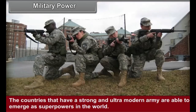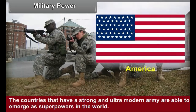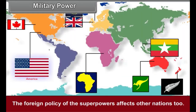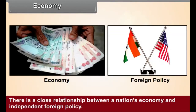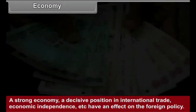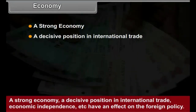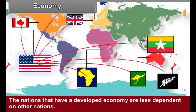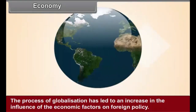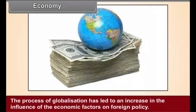Military Power: The countries that have a strong and ultra-modern army are able to emerge as superpowers in the world. The foreign policy of the superpowers affects other nations too. The countries that are militarily weak face limitations while framing their independent foreign policy. Economy: There is a close relationship between a nation's economy and independent foreign policy. A strong economy, a decisive position in international trade, and economic independence have an effect on the foreign policy. The nations that have a developed economy are less dependent on other nations. The process of globalization has led to an increase in the influence of economic factors on foreign policy.